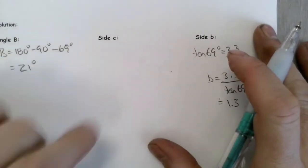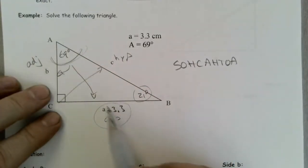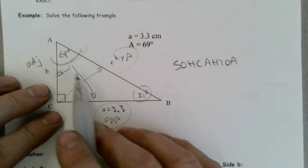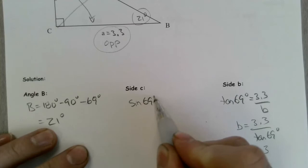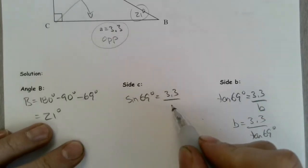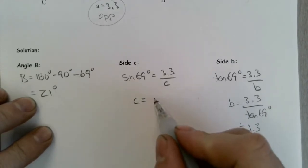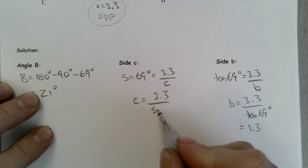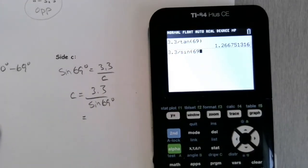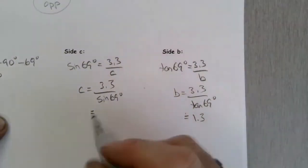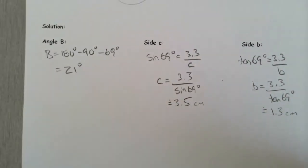One more unknown: side c, the hypotenuse. I've been given the opposite side and want the hypotenuse, so the trig function is sine. Sine of 69 degrees equals the opposite, 3.3, over the hypotenuse, c. Again, the unknown is in the denominator, so I swap: c equals 3.3 over sine of 69 degrees. Evaluating: 3.3 divided by sine of 69 gives approximately 3.5 centimeters. We've solved the triangle — we found the three missing pieces of information.